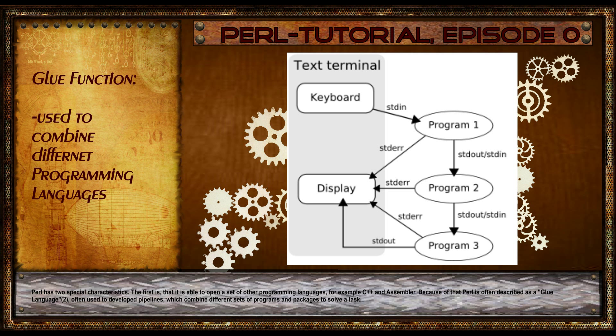Perl has two special characteristics. The first is that it is able to open a set of other programming languages, for example C++ and Assembler. Because of that, Perl is often described as a glue language and used to develop pipelines which combine different sets of programs and packages to solve a task.